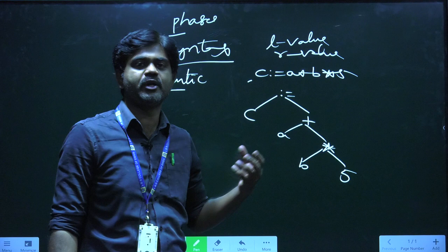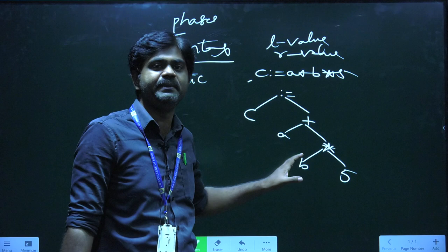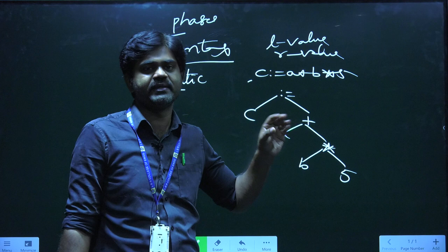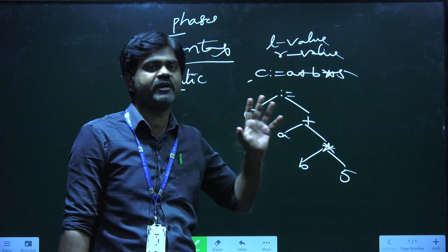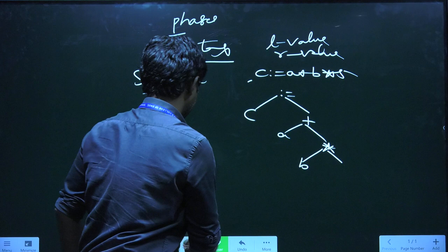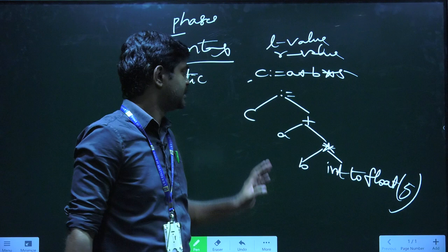The next phase is semantic analysis. In semantic analysis, everything we draw should have a meaning. Equal is an assignment operator, C is an identifier, plus is an addition symbol, A is an identifier, star is a multiplication symbol, B is an identifier. Coming to 5, we need to specify whether it is an integer or a floating point number. So 5 can also be written as 5.0, making it a floating point. Here we apply int-to-float of 5. This is called semantic analysis.